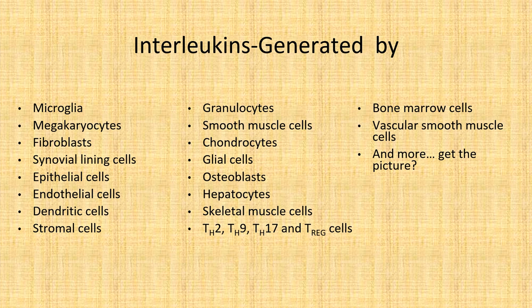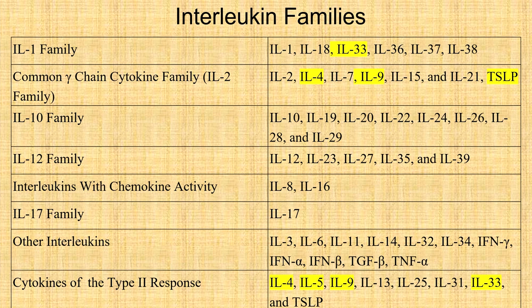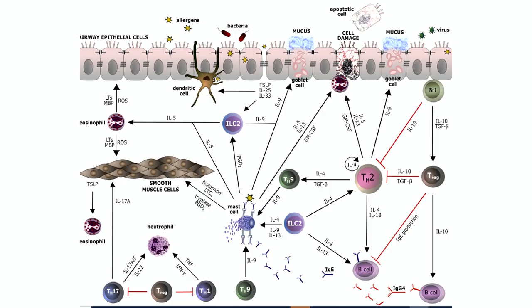There are more cells that generate interleukins, and the list goes on and on. Basically, you can look at any cell in the body and it may very well be generating interleukins. Looking at the interleukin families, on the left of the grid is the family name and on the right are representative interleukins produced in that family. The cytokines of the type 2 response mostly have their own family, though some are members of other families. This lecture will be available online for you all to download.